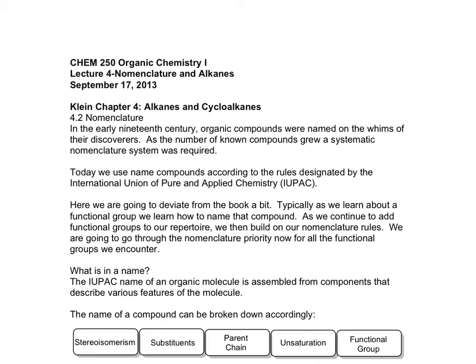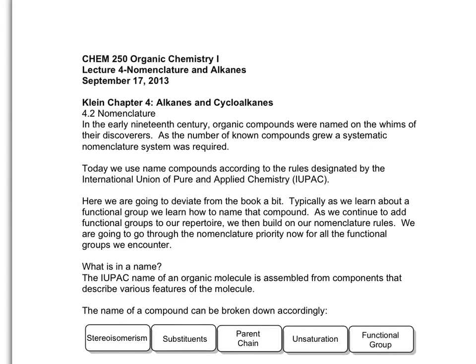We're going to begin chapter 4, but instead of starting with 4.1, I'm going to start with nomenclature. In the early 19th century, organic compounds were named on the whims of their discoverers. As the number of known compounds grew, we needed a systematic nomenclature system. The systematic nomenclature system is based upon the International Union of Pure and Applied Chemistry, also known as IUPAC. For your exam, you're only going to be responsible for alkanes and cycloalkanes.